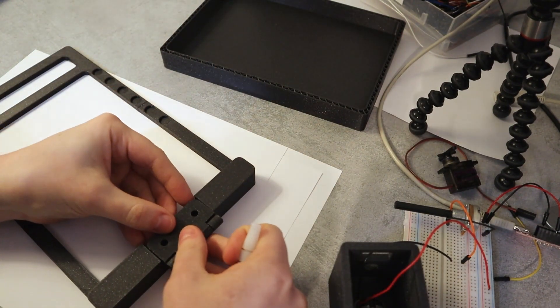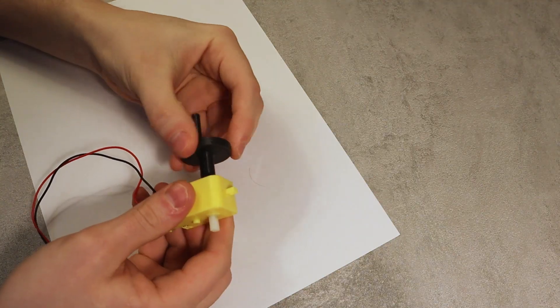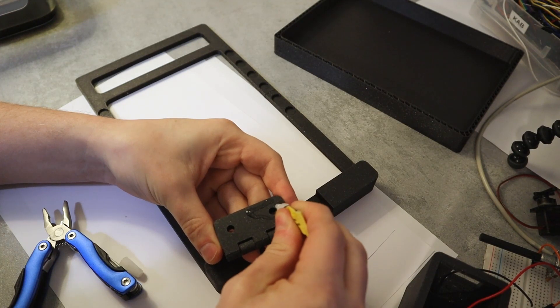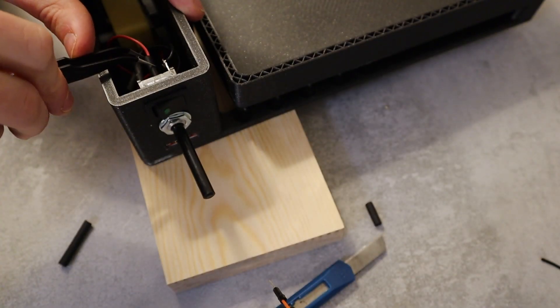I found a print-in-place hinge online that will hold the box in its place as it is lifted up and down by the motor. I used super glue to connect the parts and install the electronics in this little box on the side.